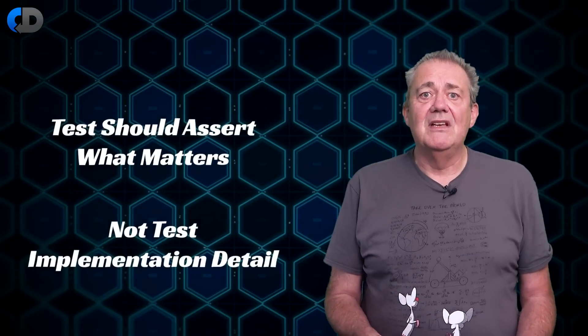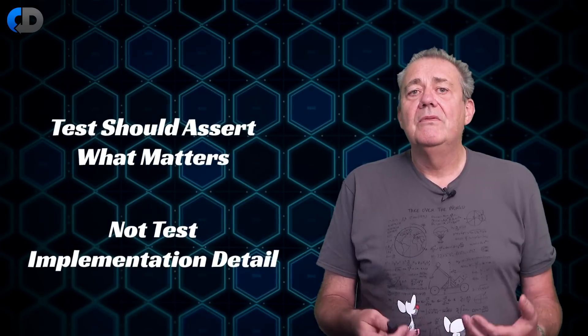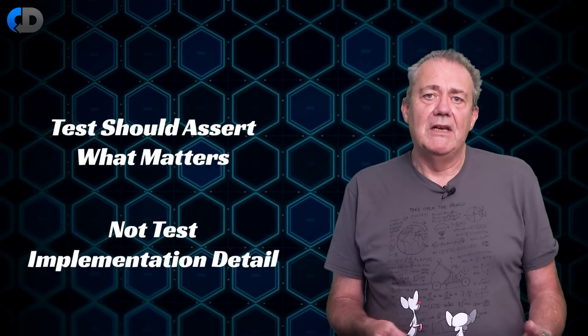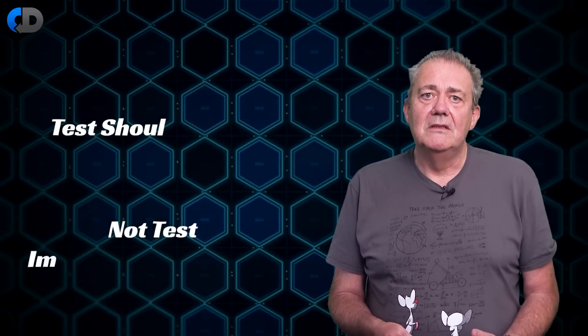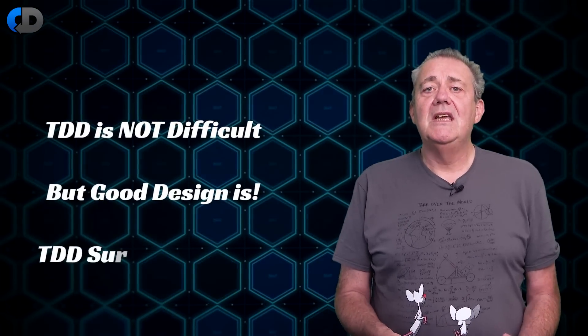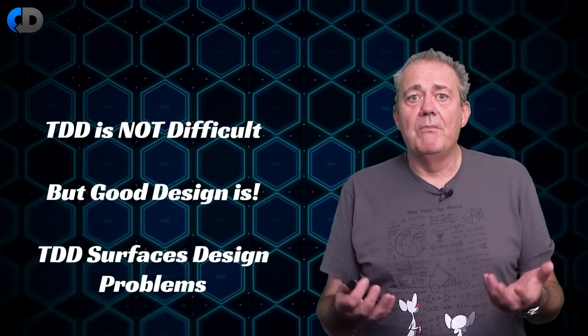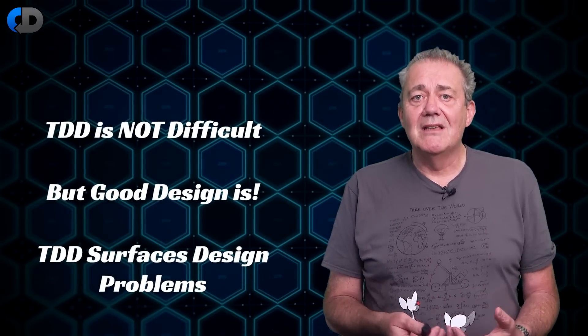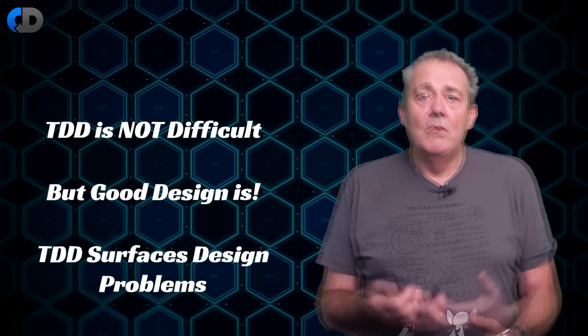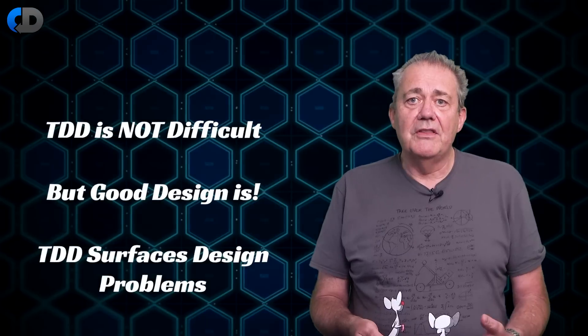Fundamentally, this means that we need our tests to assert things that matter, but not care about things that are only implementation detail. This gets us to the hard part really of test-driven development, which actually has very little to do with test-driven development and is really all about design. TDD isn't difficult, but good design is. TDD merely helps us to surface the problems with our design. So if as part of our design we're interested in interactions with other parts of the code base, what matters, what doesn't, and what counts as good design rather than bad?